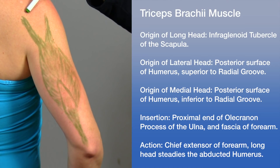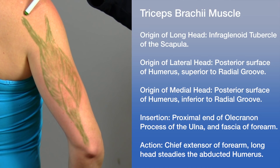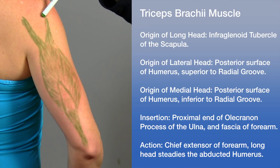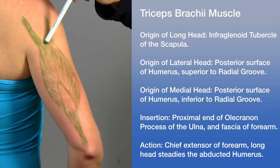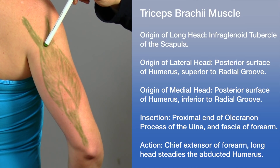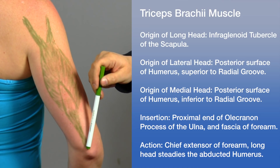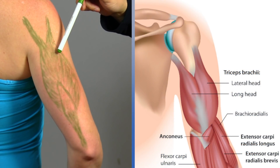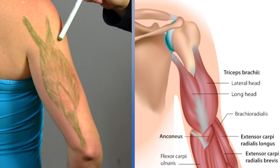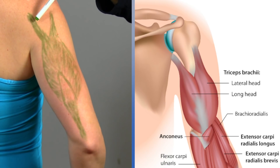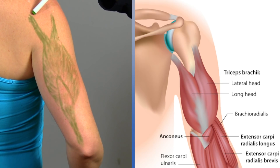Now we'll discuss the muscles used in extension of the elbow, starting with the triceps brachii. As the name suggests, it consists of three heads. The long head originates from the tubercle just below the glenoid cavity of the scapula. The lateral head originates from the lateral posterior shaft of the humerus. The medial head lies deep to the other muscles and comes off the posterior inferior humerus. The triceps has a single long flat tendon that inserts into the olecranon, and these muscles are the major elbow extensors. The long head also participates in extension of the arm because of its attachment to the scapula.